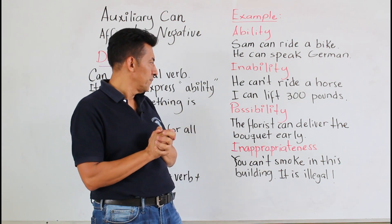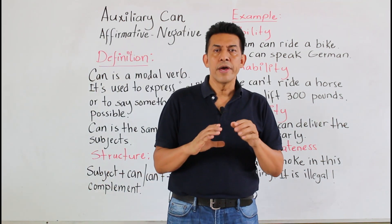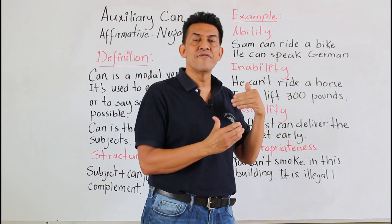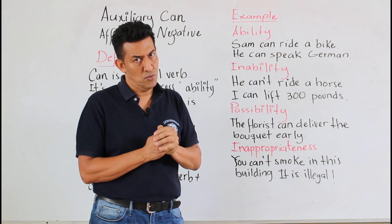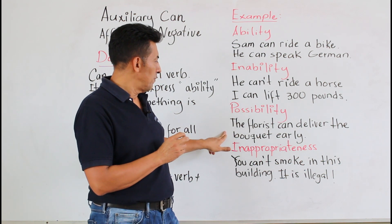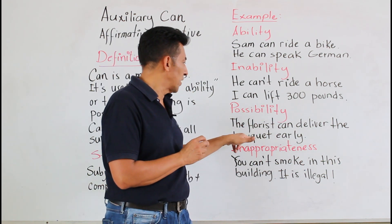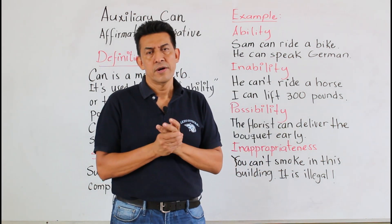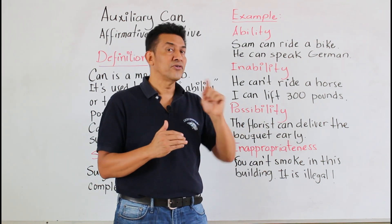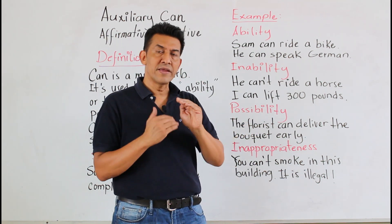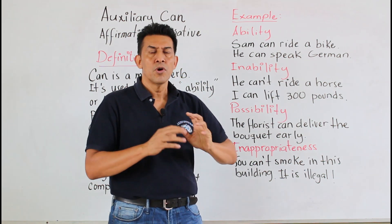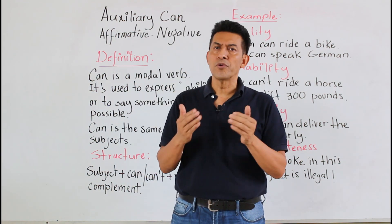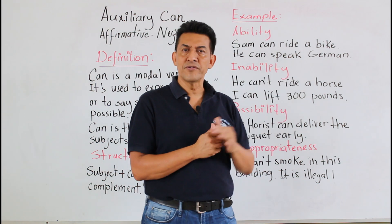Impossibility. También podemos utilizarlo cuando nosotros tenemos una posibilidad de hacer algo. Tenemos un ejemplo: The florist can deliver the bouquet early. Esta de posibilidad es algo que puede suceder, no es algo que realmente va a suceder. Aquí no se trata de habilidades, se trata de posibilidades. Por ejemplo, cuando yo me invitan a un lugar y yo puedo decir que tengo la posibilidad de poder asistir.